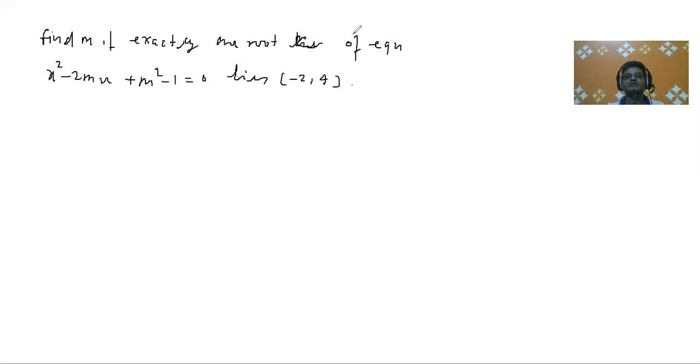For solving this kind of question, what we are taking? We are first of all finding out D greater than 0, first condition. So in this case, you can see that A is 1, B is -2m, and C is m² - 1.